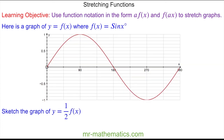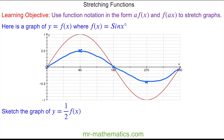Do you want to try and sketch what you think one-half f of x will look like? You can pause the video and resume it when you're ready. When x is equal to 90, f of x is 1 — we multiply this 1 by one-half. And we'll also multiply the negative 1 by one-half to get negative one-half. So this time it is a vertical compression. Thank you for watching, I hope you found that useful. Thanks again and take care.